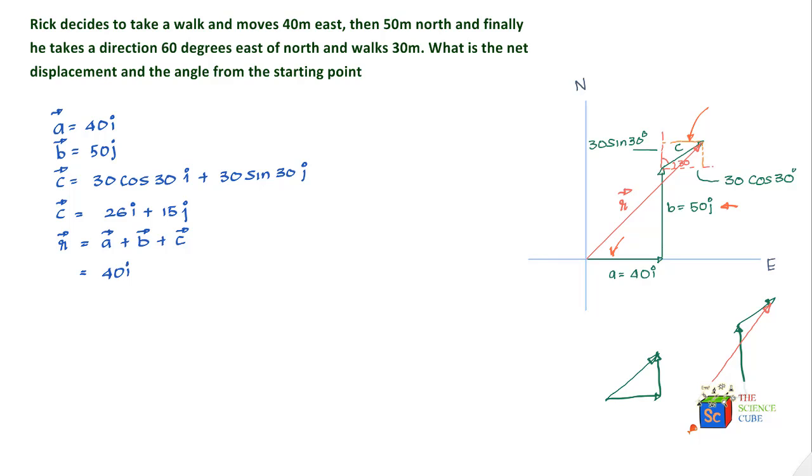Let's put each of the vectors: 40 I plus 50 J plus 26 I plus 15 J, and we'll find that vector R equals 66 I plus 65 J. So the magnitude of this vector R would equal the square root of 66 square plus 65 square, which equals 92 meters.